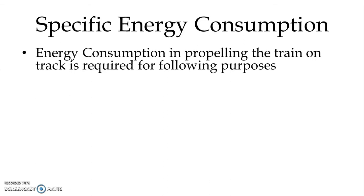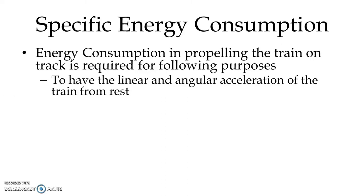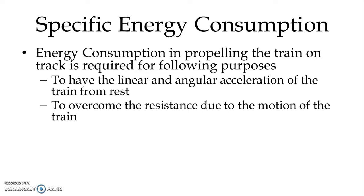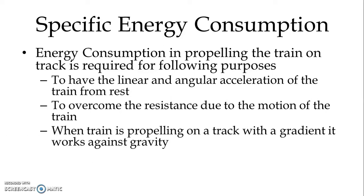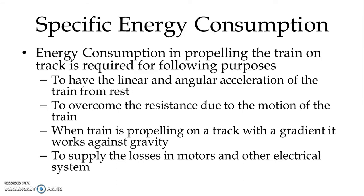Energy consumption in propelling the train on track is required for the following different purposes: to provide linear and angular acceleration of the train from rest; to overcome the resistance due to the motion of the train; when the train is propelling on a track with a gradient it works against gravity; and to supply the losses in motors and other electrical systems. These four different purposes identify the requirement of energy consumption during propulsion of the train.